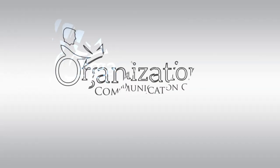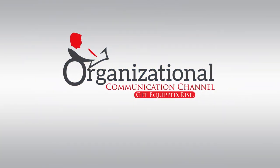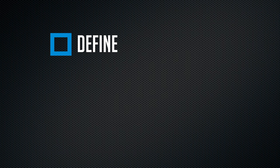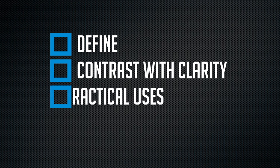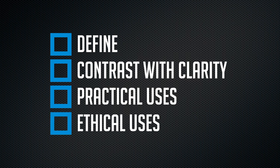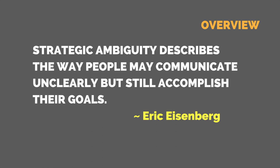Today we're going to look at strategic ambiguity and how this shapes our lives in organizational settings. Strategic ambiguity describes the way people may communicate unclearly but still accomplish their goals.